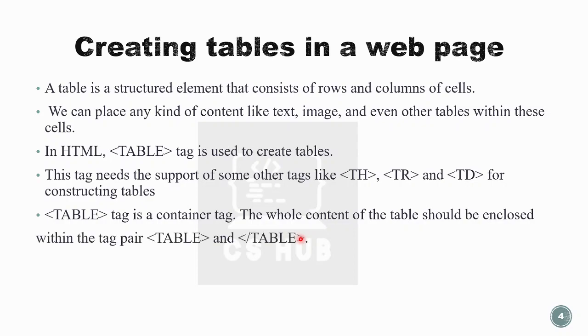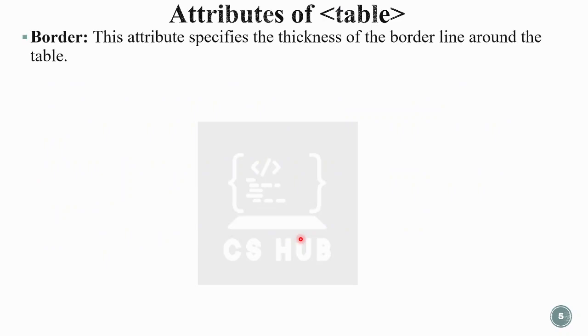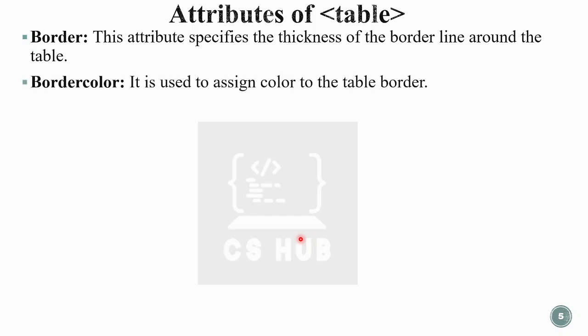Now let's discuss the attributes of the table tag. The first attribute is border, which specifies the thickness of the border line around the table. We need to set border equal to one, or two, etc. Without specifying a border, the table arrangement won't have any visible border. We can also specify the border color.